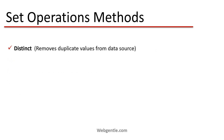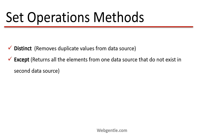The first method is Distinct. The Distinct method is used to remove duplicate values from the data source. If you need to fetch all unique values and distinct records, you can use the Distinct operator. The second method is Except, which returns all the elements from one data source that do not exist in the second data source. You will have two data sources and need to fetch all the records from the first that do not exist in the second — we use Except for that.